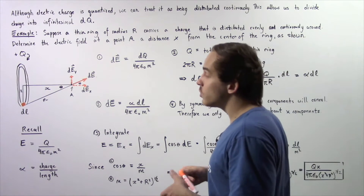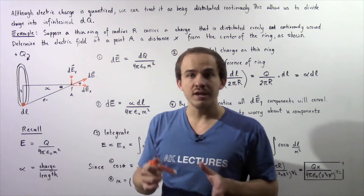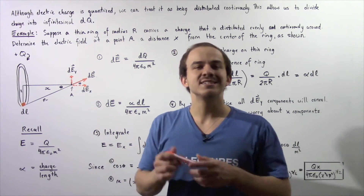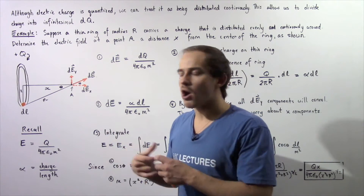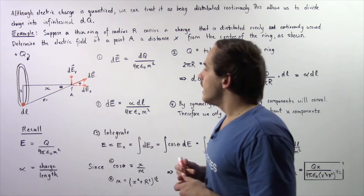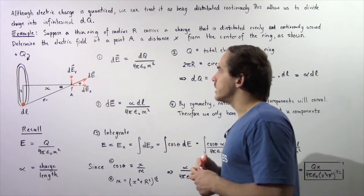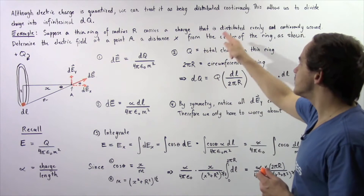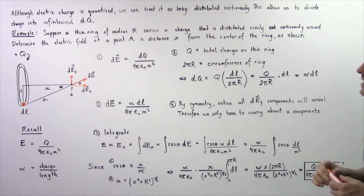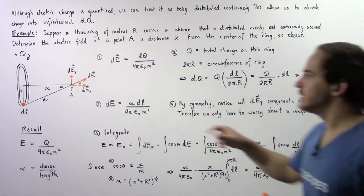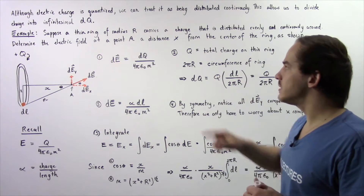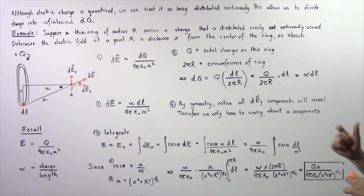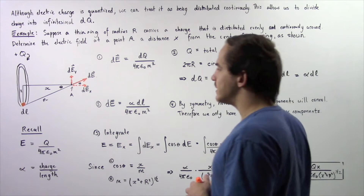In this lecture, we're going to find the electric field at some given point as a result of a macroscopic thin ring composed of some charge given by q. Suppose a thin ring of radius R carries a charge that is distributed evenly and continuously around the ring. We want to determine the electric field at point A, a distance x from the center of that ring, as shown in the following diagram.